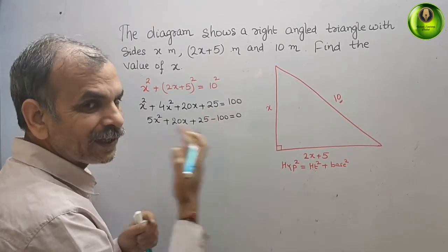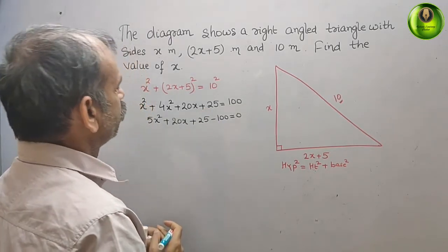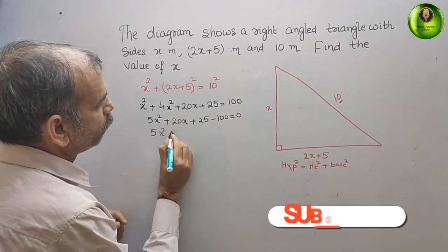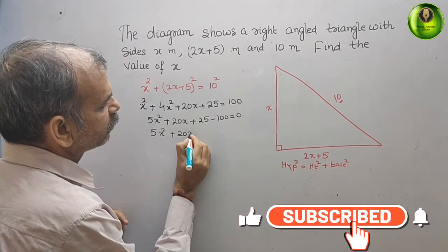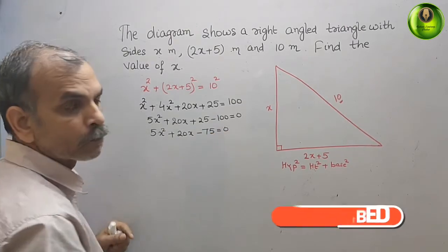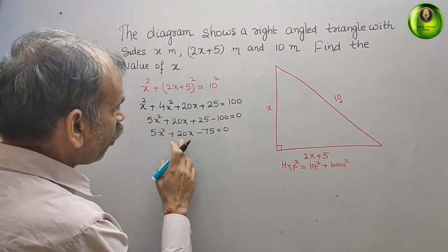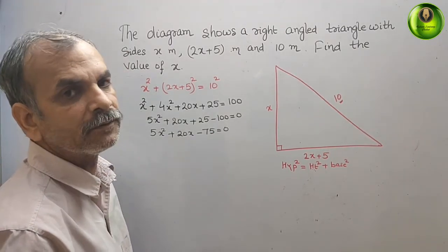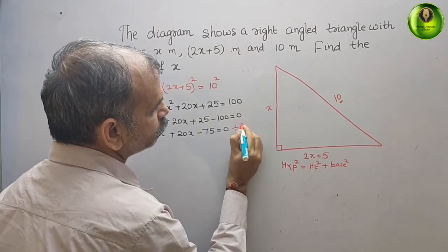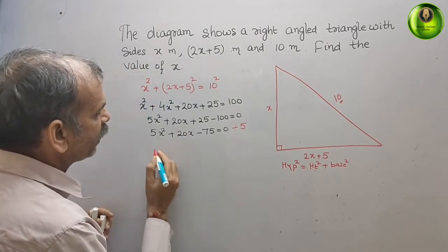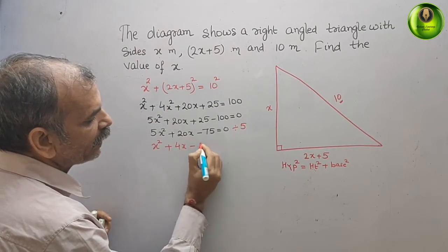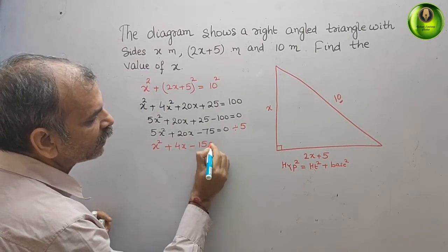We bring 100 to the left side. That gives us 5x squared plus 20x minus 75 equals 0. We can see all three terms are divisible by 5, so dividing by 5, we get x squared plus 4x minus 15 equals 0.